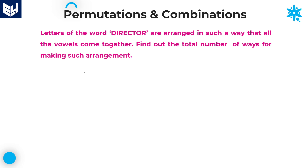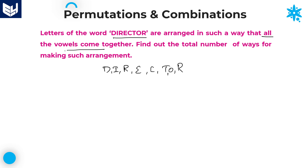The next question: letters of the word DIRECTOR are arranged such that all the vowels come together. The word is DIRECTOR, and we need to find the number of arrangements where all vowels come together. First, identify all the vowels: I, E, O — these are the 3 vowels which must always come together.